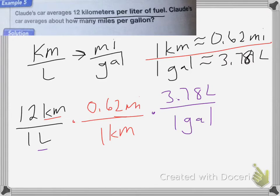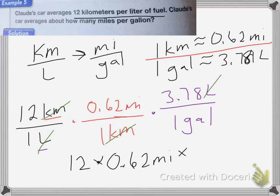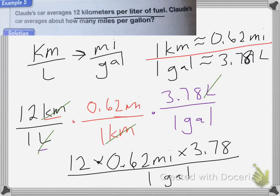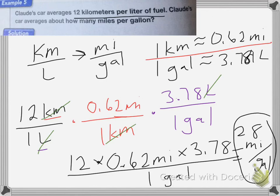Now I can start to cancel. Kilometers and kilometers cancel, liters and liters cancel. I end up with 12 times 0.62 miles times 3.78, all divided by one gallon. You could use a calculator or round it, but we end up with about 28 miles per gallon as my answer. And that's it for this lesson.